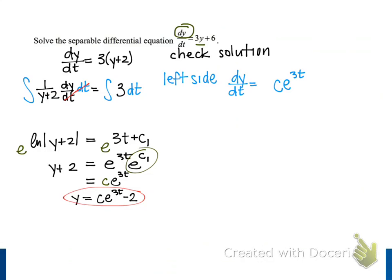The result is c times e to the 3t, and then since we're using the chain rule, we multiply that by 3, the derivative of the exponent. So that's the left side of our differential equation using our solution for y.